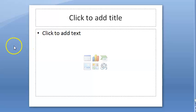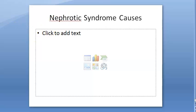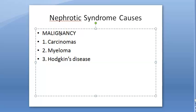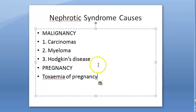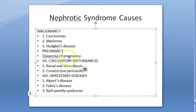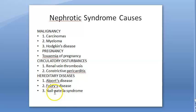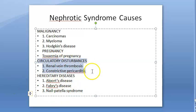There are even more causes. Malignancies like carcinomas, myeloma, and Hodgkin's disease can be causes. Pregnancy with toxemia of pregnancy is also a cause. There can be circulatory disturbances and hereditary diseases. Hereditary diseases include Alport's disease, Fabry's disease, and Nail-Patella syndrome. Circulatory disturbances include renal vein thrombosis.